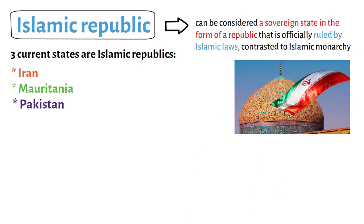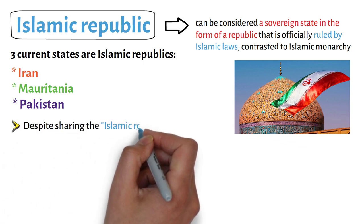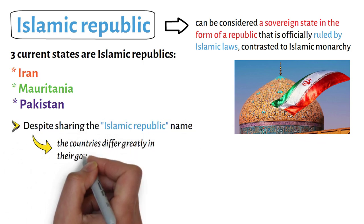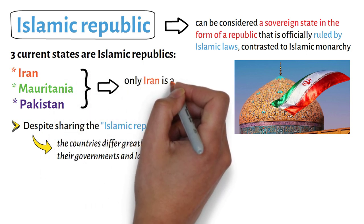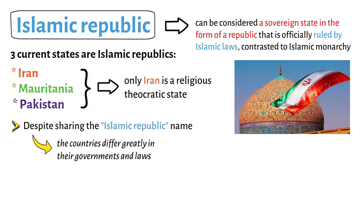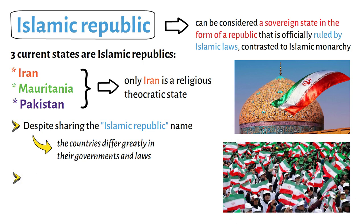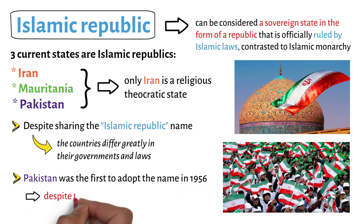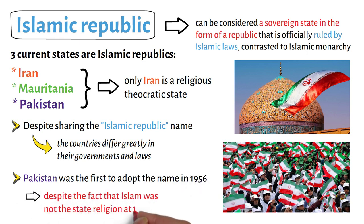The term is, however, vague. Despite sharing the Islamic republic name, the countries differ greatly in their governments and laws, and of the three, only Iran is a religious theocratic state. Additionally, Pakistan was the first to adopt the name in 1956, despite the fact that Islam was not the state religion at the time.